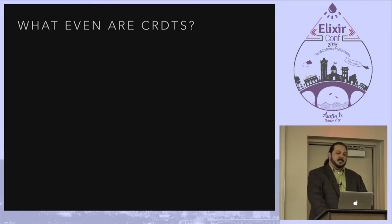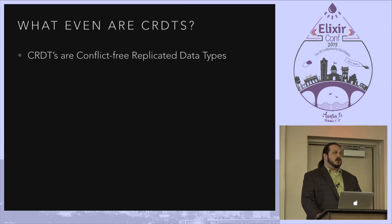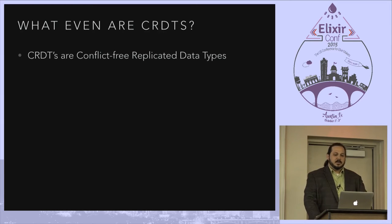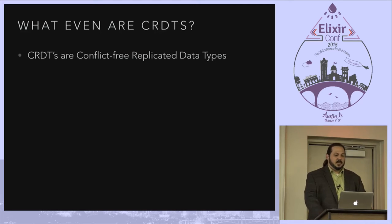So what are CRDTs? Generically they're known as conflict-free replicated data types. There are two flavors. One is commutative data types — those are the log-based ones where you keep a log of all the updates, read over the logs, apply the operations, and spit out a result. Then there are state-based ones which are easier to reason about, but they can get very large and it's very hard to ship very large CRDTs around.